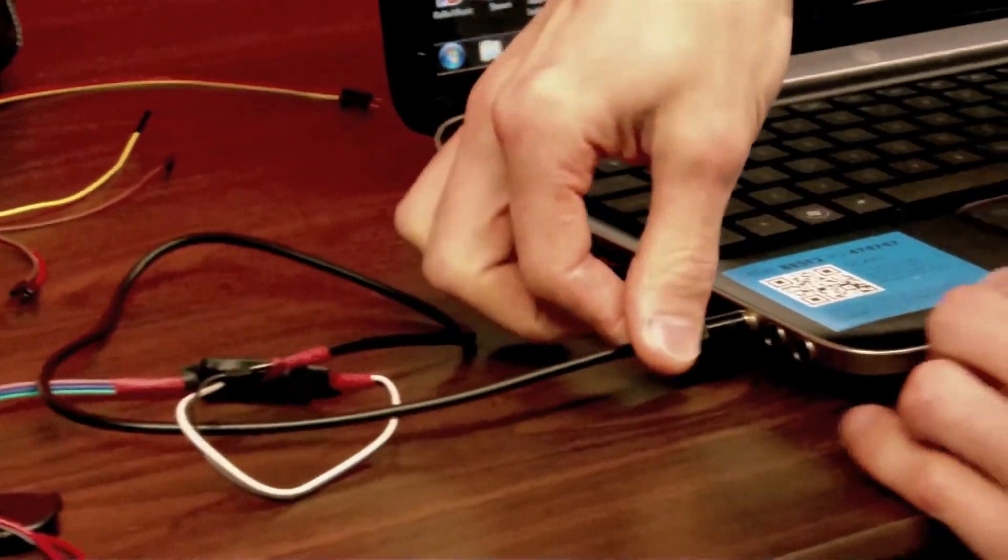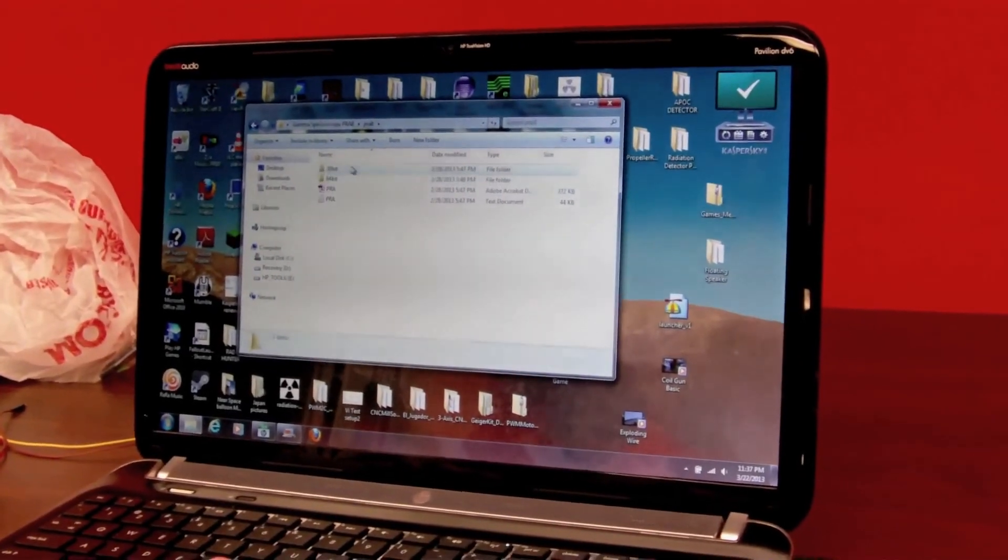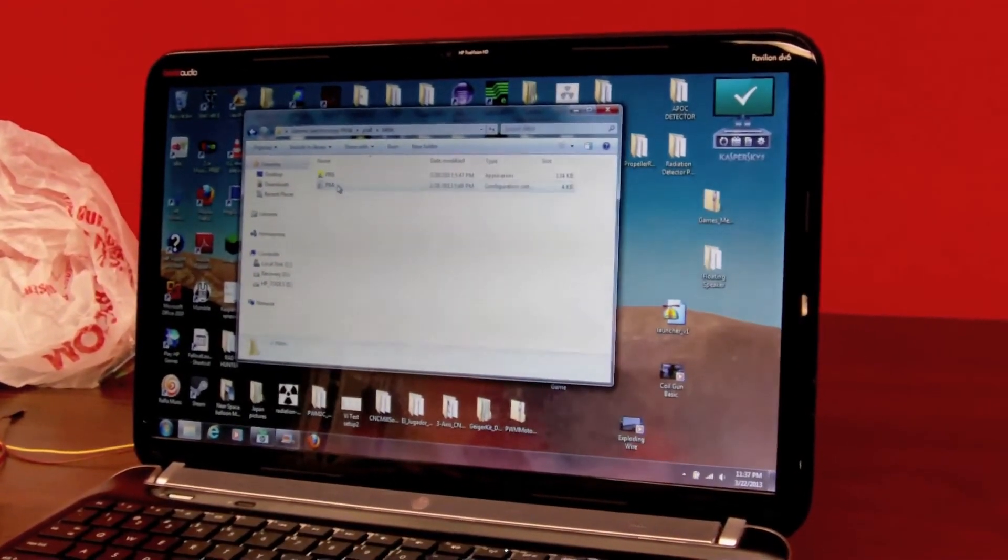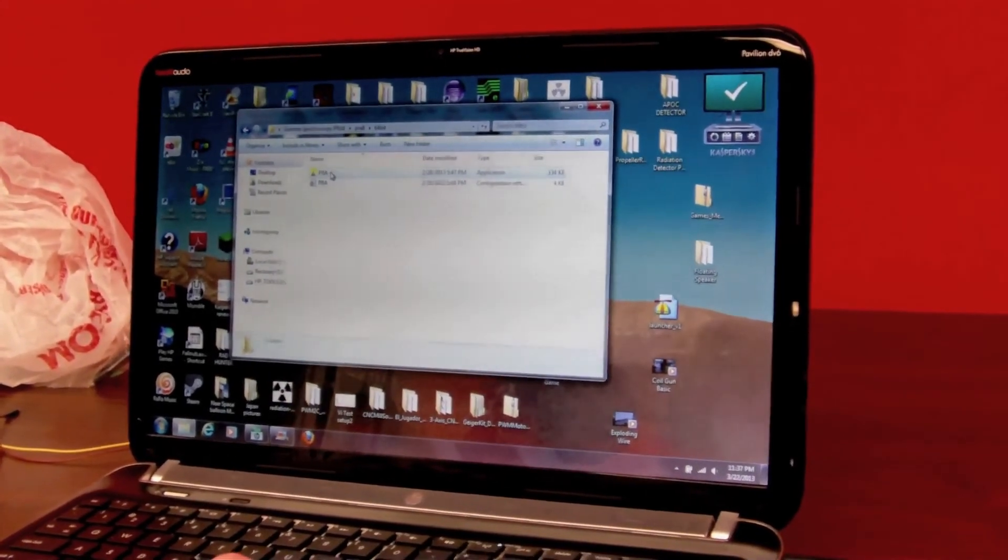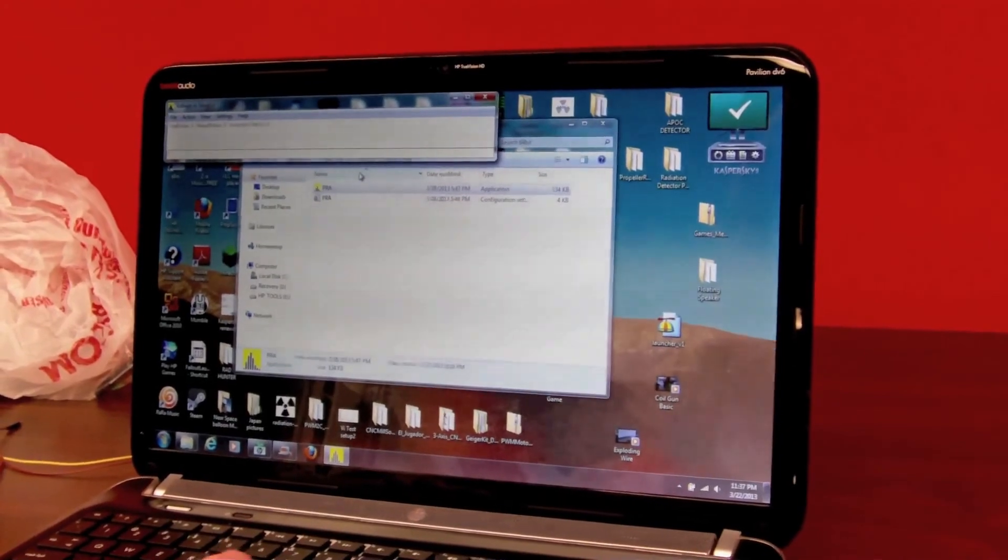Plug it into your mic port. And I'm going to use the same source disk, which produces around 72 to 80 counts per minute. Okay, so then we open up the software. The software's called PRA8. It's written by Mark Dulleser from the University of Sydney.